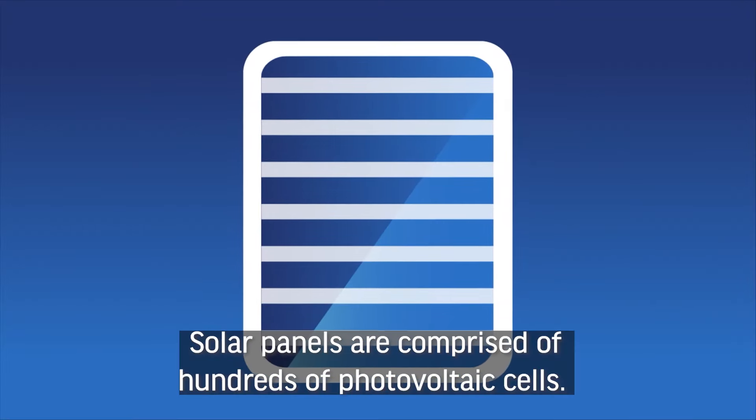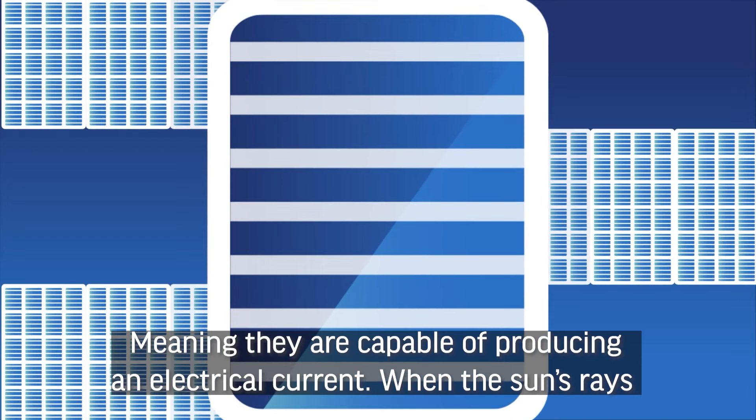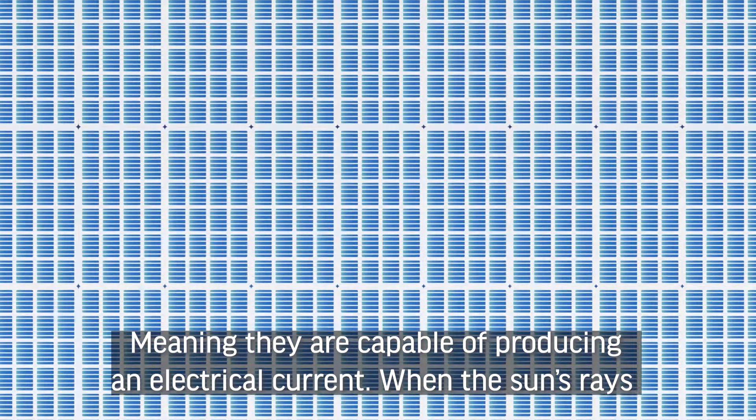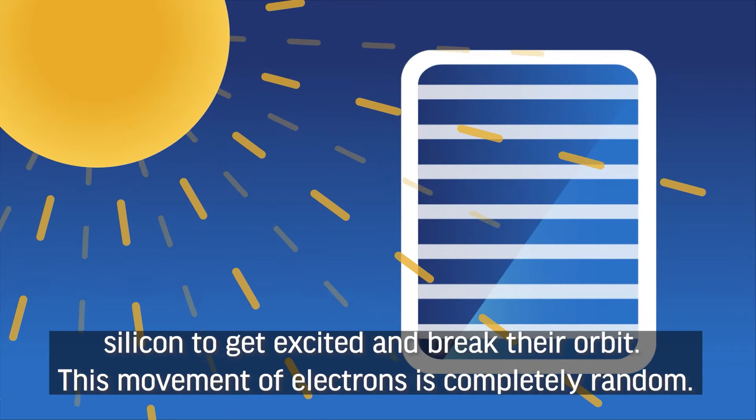Solar panels are comprised of hundreds of photovoltaic cells, meaning they're capable of producing an electrical current. When the sun's rays shine down on the panel silicon, they cause the electrons inside the silicon to get excited and break their orbit.